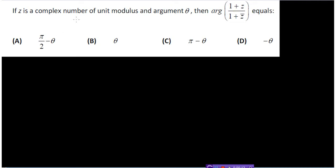Now we are given that z is a complex number of unit modulus and argument theta, so we can take z as e to the power i theta. If we look at the expression argument of 1 plus z, which is e to the power i theta, upon 1 plus z bar, which is e to the power minus i theta.